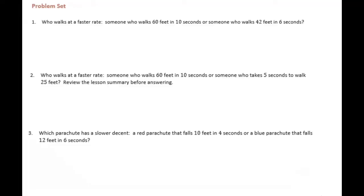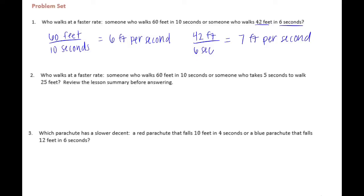6th grade module 1 lesson 23 problem set. Number 1: Who walks at a faster rate, someone who walks 60 feet in 10 seconds or someone who walks 42 feet in 6 seconds? Let's start with 60 feet in 10 seconds. 60 divided by 10 is 6 feet per second. And then 42 feet in 6 seconds, 42 divided by 6 is 7 feet per second. So the person who would walk fastest is 42 feet in 6 seconds.